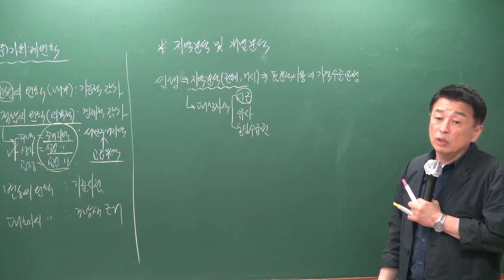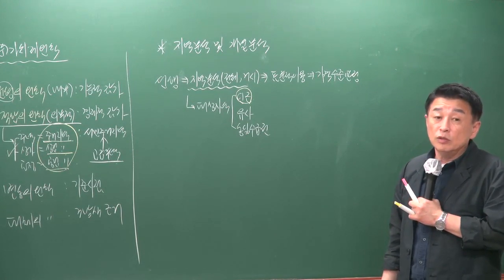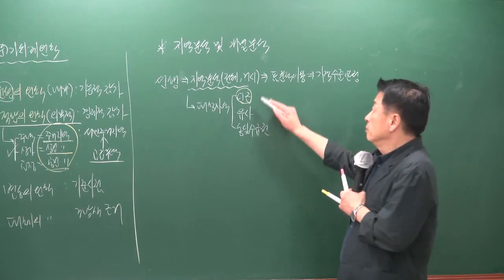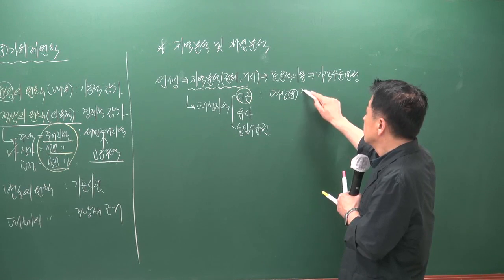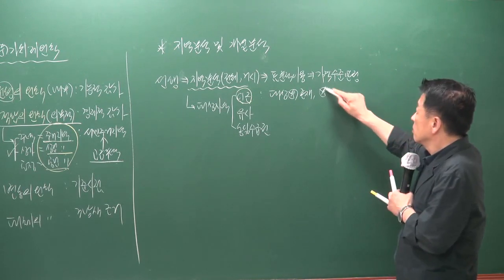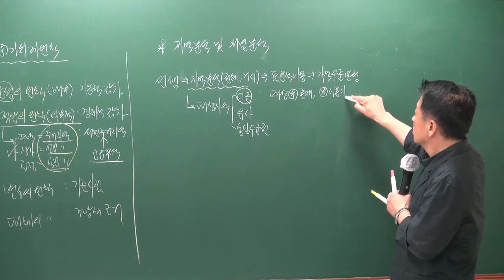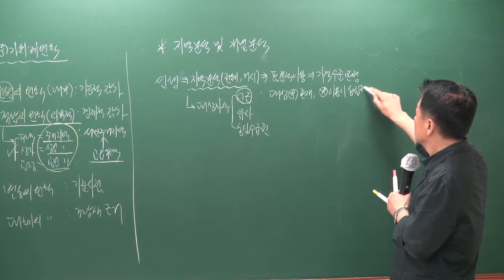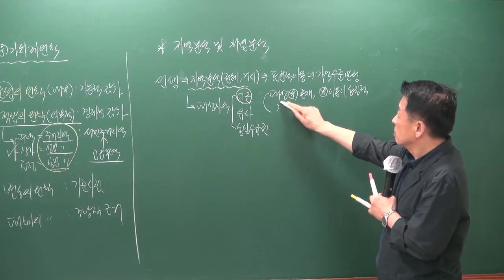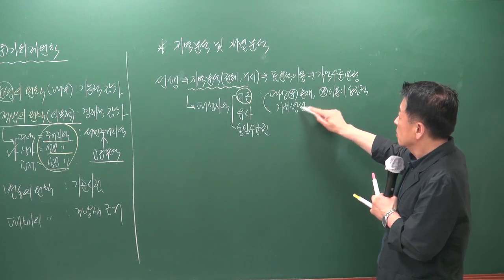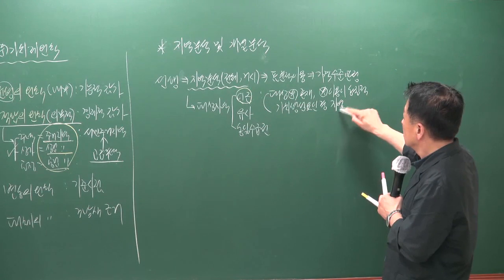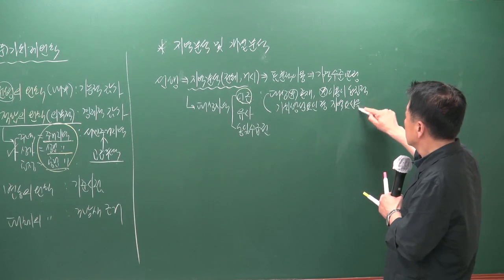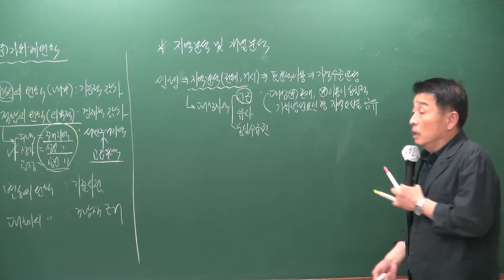인근 지역이란 대상 부동산이 속해 있는 지역으로, 같은 지하철 노선을 이용하고 비가 올 때 같이 우산을 쓰는 등 지역적 환경이 같은 지역입니다. 지역적 환경이 같기 때문에 가격 격차가 거의 없다고 봅니다.